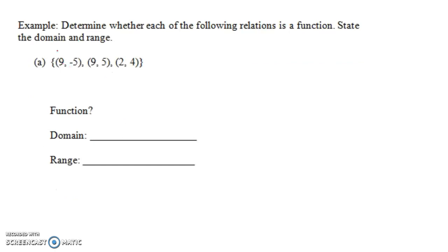Let's do a couple examples. Determine whether each of the following relations is a function, and state the domain and range. We have a collection of three ordered pairs. Is this a function? No, because 9 corresponds to two different things: 9 goes to minus 5 and 9 also goes to 5. So this is not a function. The domain includes 9 and 2 — we only write 9 one time. The domain is the set {9, 2}.